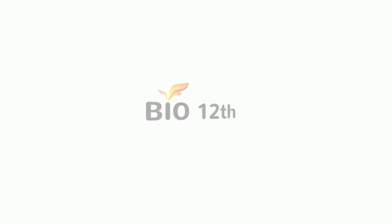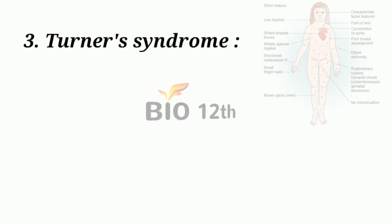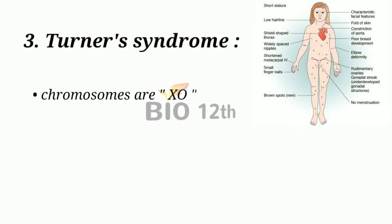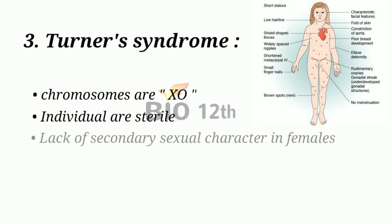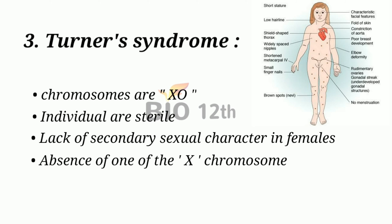Third, Turner syndrome. The chromosomal composition is XO. Individuals are sterile, and there is a lack of secondary sexual characters in females.